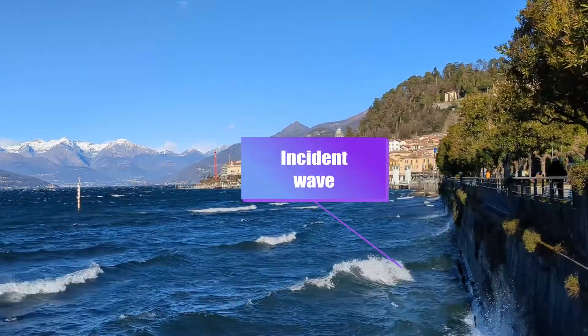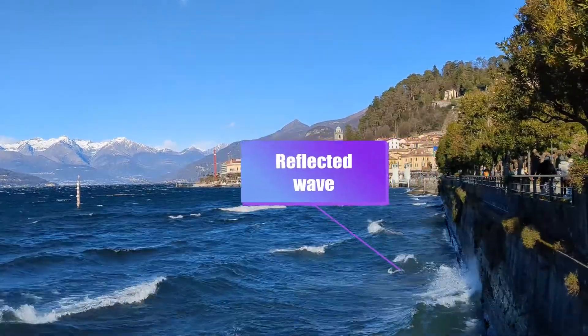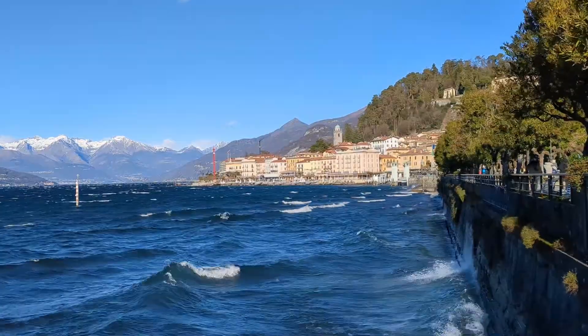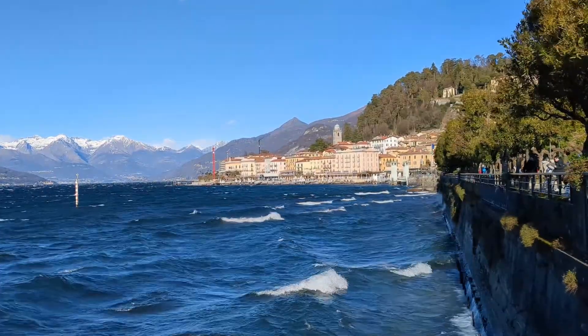When this water wave hits a seawall, it reflects off the wall with almost the same size and wavelength. The only difference is that its direction is now different than before it hit the wall.